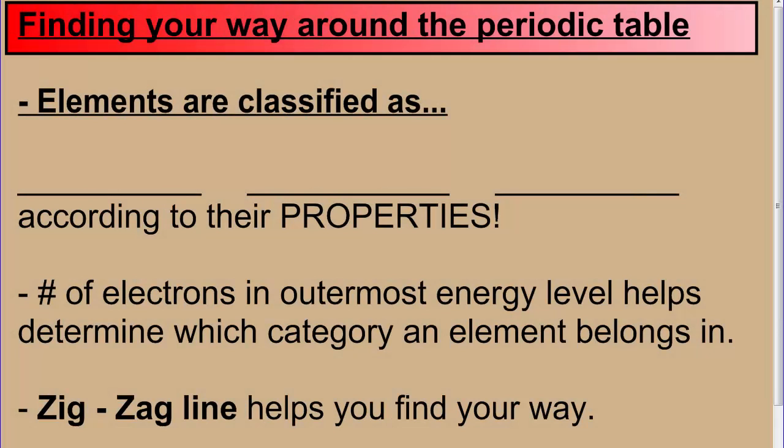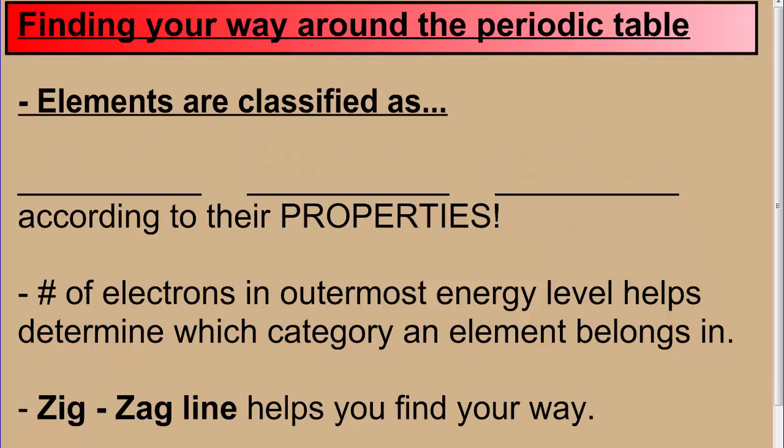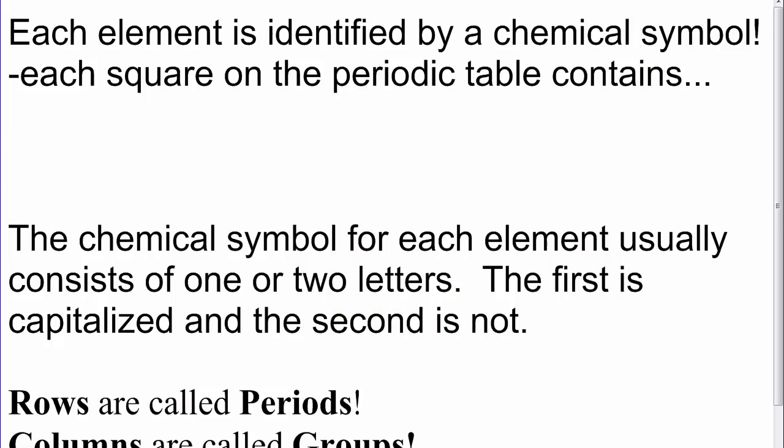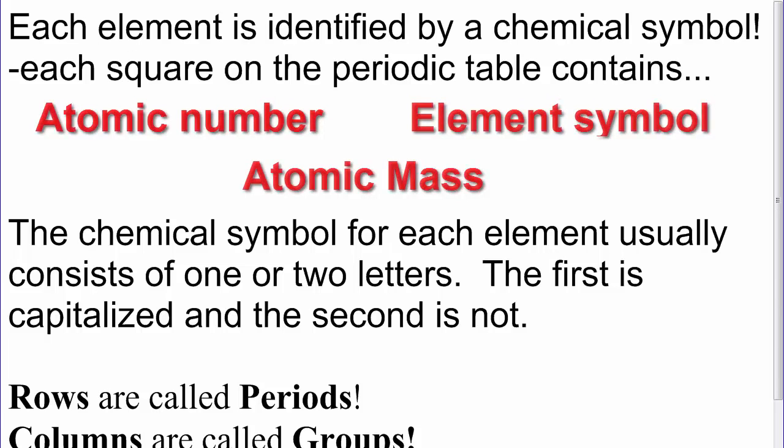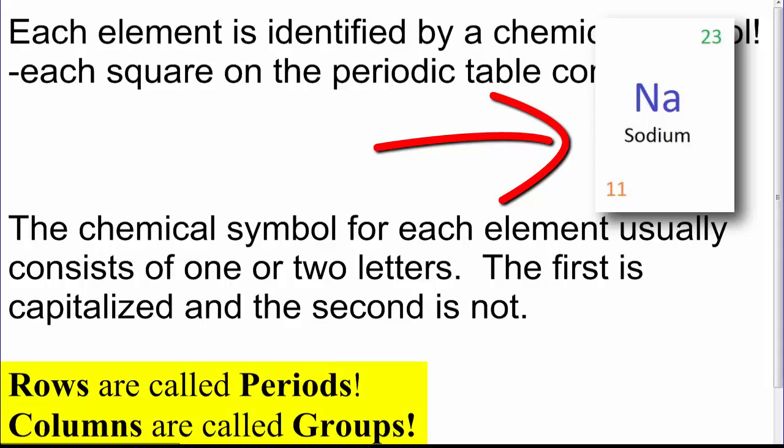So the modern periodic table has the elements classified into three categories: metals, nonmetals, and metalloids. And they put these in those three categories according to their properties. Now you're also going to learn that the number of electrons in the outermost energy level is very important. This is called the valence. And that's going to help us determine which category these elements belong in. The zigzag line also helps you find where the metalloids are, and how the metals are located on the left hand side of the zigzag, and the nonmetals are located on the right hand of the zigzag. Each element is identified by a chemical symbol. And each square of the periodic table contains the atomic number, the atomic mass, the symbol. Sometimes it's the average atomic mass, so it will be a decimal. The chemical symbol for each element usually consists of one or two letters. The first is capitalized and the second is not. Rows are called periods and columns are called groups.